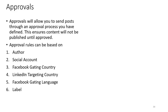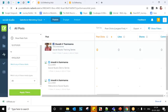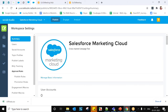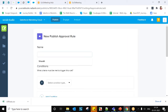Approvals allow you to send posts through an approval process. Approval rules can be based on authors, social accounts, Facebook gating country, LinkedIn targeting country, Facebook gating languages, and labels. To create approval rules, go to Workspace Settings and click Publish Rules. As of now, there are no approval rules created — click Create New and first name the approval rule.